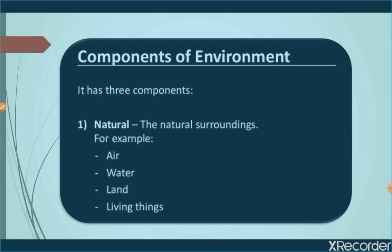Our environment has three main components: natural, man-made, and human. Natural, which is also known as physical environment — all the natural surroundings are known as natural or physical environment, and life is impossible without them. The air, water, land, and living things — meaning plants, animals, and human beings — comprise the natural environment.